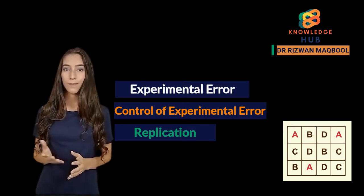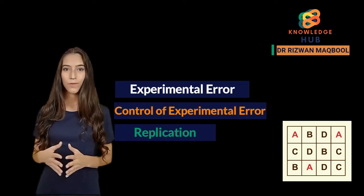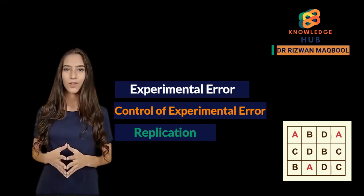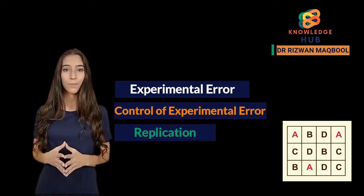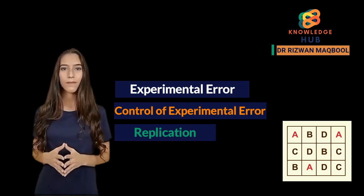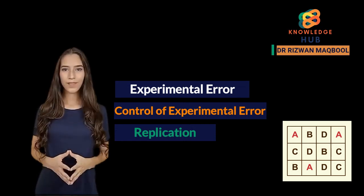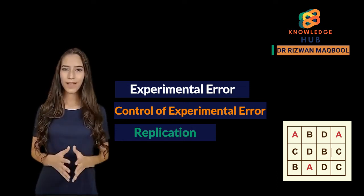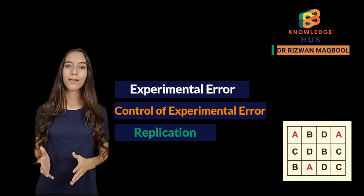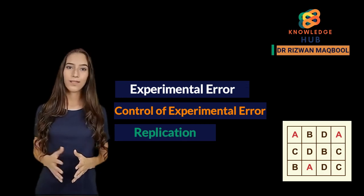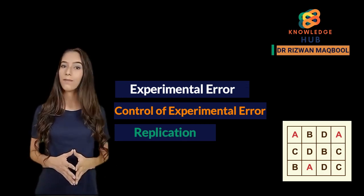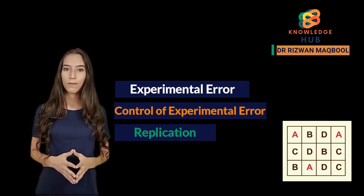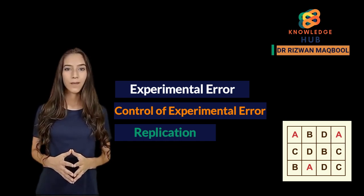Replication is the repetition of a treatment in an experiment — repeating a treatment more than once. Four functions of replication: (1) provide an estimate of experimental error, needed for tests of significance. Without replication, an estimate of experimental error cannot be calculated, and therefore tests of significance cannot be conducted.